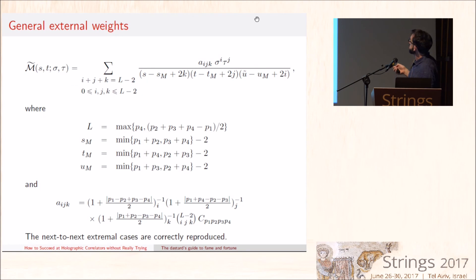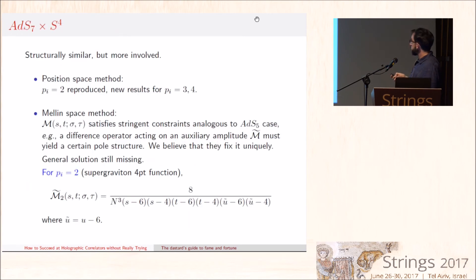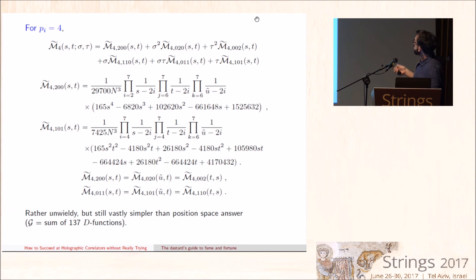We don't have a complete proof of uniqueness, but we think it's unique. I'm out of time, so let me just flash the result for arbitrary external weights. It's slightly more involved, but really structurally is the same. And I also want to flash this very briefly. For AdS7×S4, the results are structurally similar but significantly more involved. So the ideology is the same. The supergraviton amplitude takes a very simple compact form, but already for P=4, we found a somewhat uninspiring answer, which, however, I would take this any day over a sum of 137 D-functions.